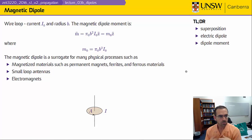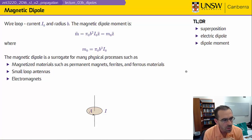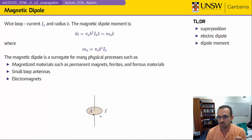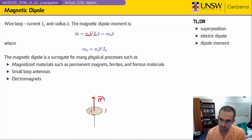The magnetic dipole is a wire loop — we don't have magnetic point charges, but a wire loop gives us exactly the same field. I've got a current I and a radius b, or more importantly an area A associated with that element. I can define the magnetic dipole moment as the area πb² times the current, and the direction of the magnetic dipole moment is perpendicular to the plane of the loop.